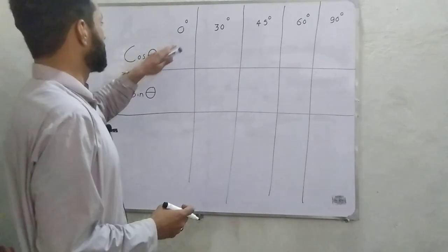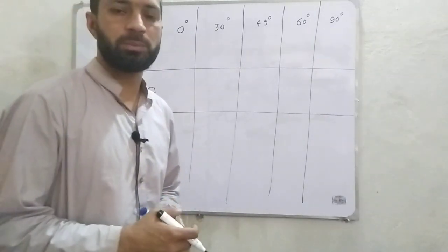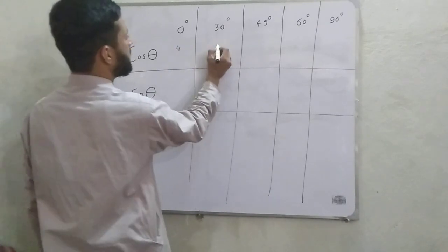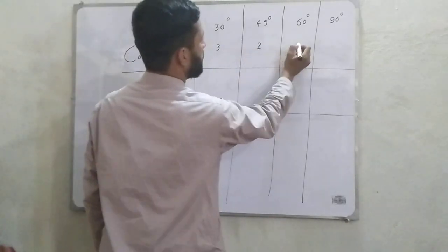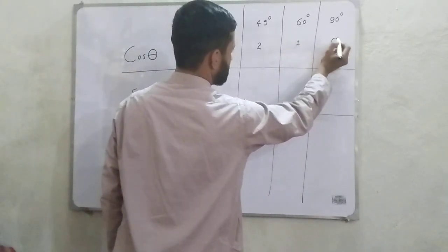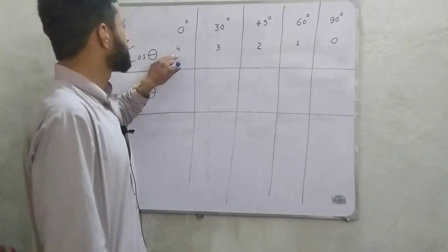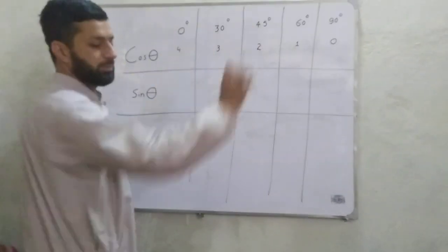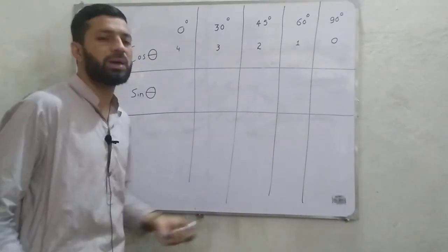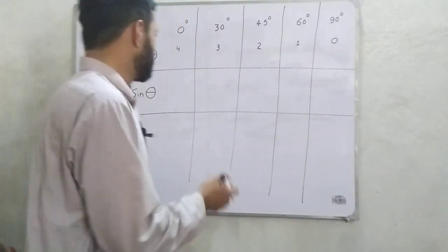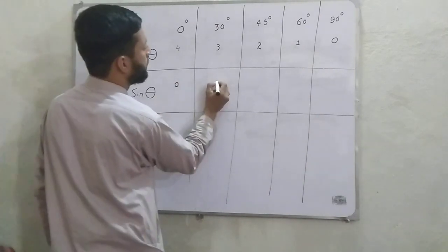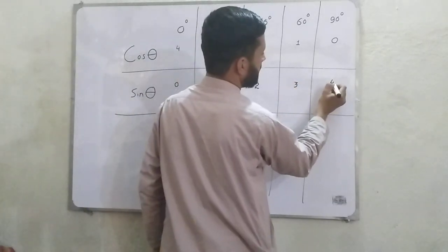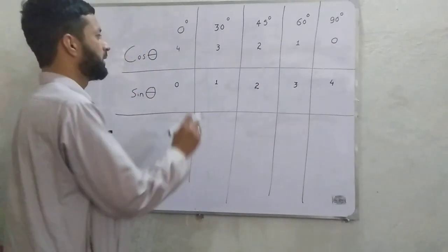As we know, cos 0 is equal to 1, so we start from the maximum value. For cos theta, we start from 4, then 3, then 2, then 1, then 0 — that is descending order. For sine theta, we start from the minimum, so we go in ascending order: 0, 1, 2, 3, and 4.